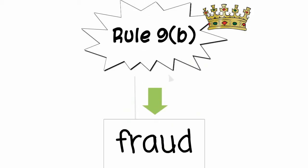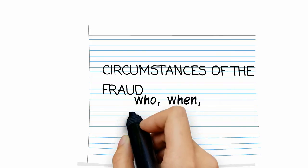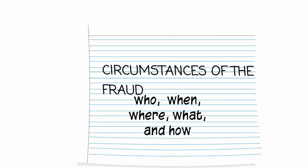Rule 9 applies to allegations of fraud. That means Patty will have to plead the circumstances of the fraud with particularity. To plead the circumstances of the fraud with particularity, Patty should allege who, when, where, what, and how.